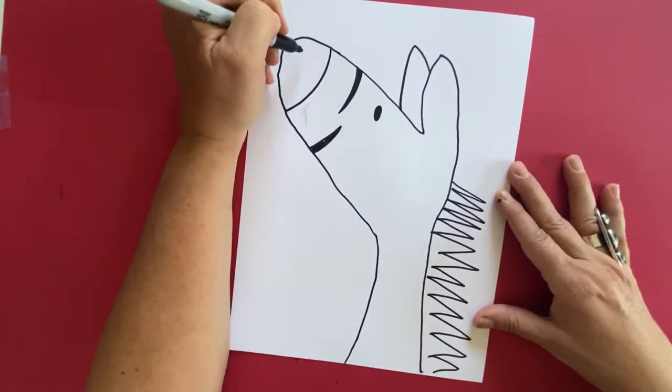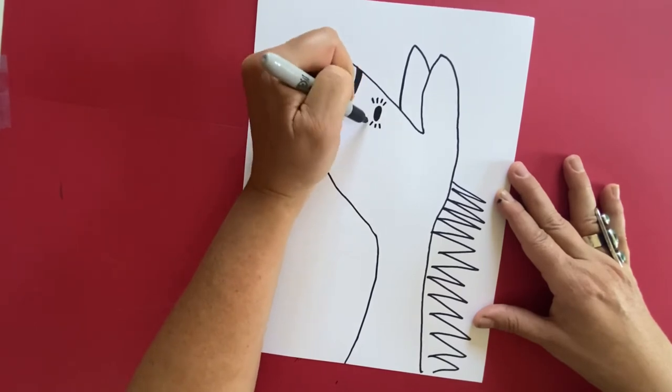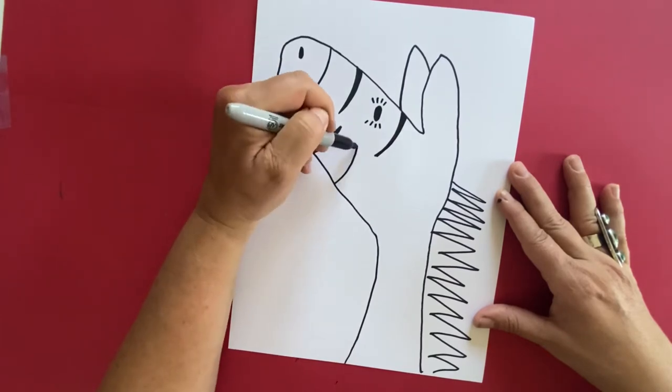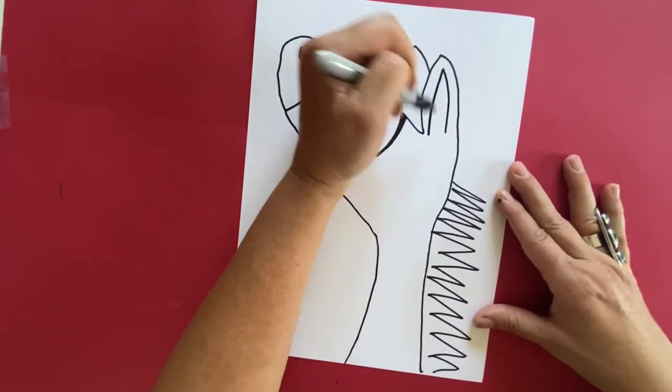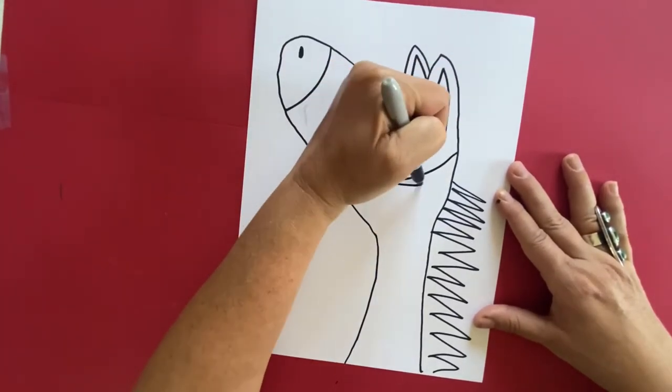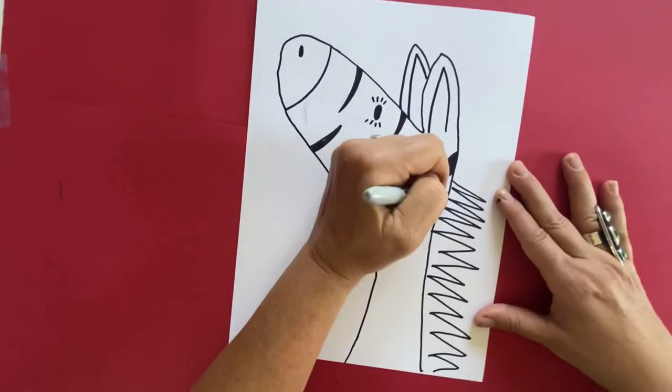Also don't forget a nostril. I'm going to make an oval nostril. And some eyelashes on my eye. And then I'm going to continue making my zebra stripes. Up, down, color in. Up, down, color in.